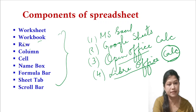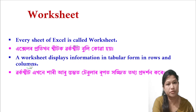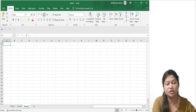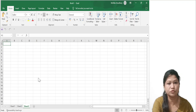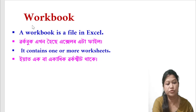In detail, we have worksheets, workbook, row, and columns. Every sheet of Excel is called a worksheet. A worksheet displays information in tabular form in rows and columns. A workbook is a file in MS Excel — it contains one or more worksheets.